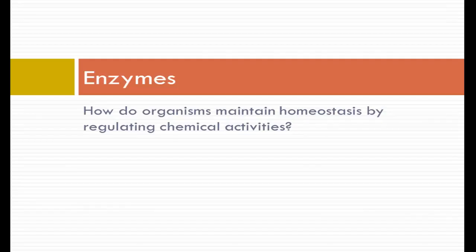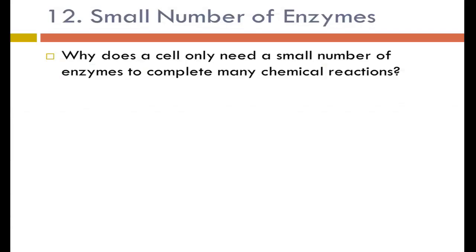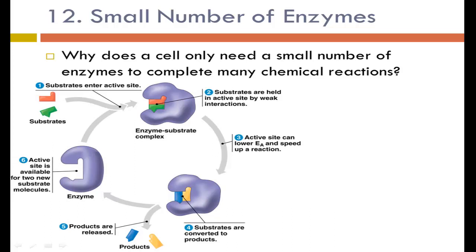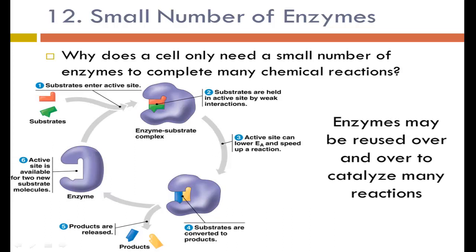The next section focuses on proteins, specifically enzymes. Why does a cell only need a certain number of enzymes to complete many chemical reactions? Enzymes can be reused over and over. The substrate enters the active site of the enzyme, is converted into products, the products are released, and the active site is available again. One enzyme molecule might be reused hundreds of times until eventually the cell replaces it.